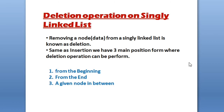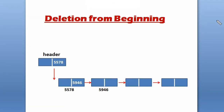The deletion operation on a singly linked list refers to removing a node or data from it. Similar to insertion, deletion also has mainly three positions: the first one is from the beginning, the second one is from the end, and the third one is at a given node in between. We'll start with deletion from the beginning of a singly linked list.